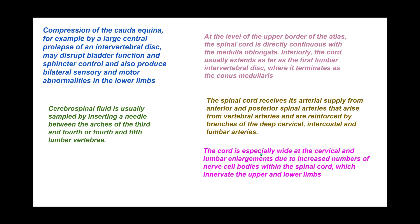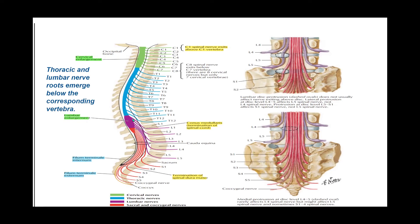The spinal cord is especially wide at the cervical and lumbar enlargements due to increased numbers of nerve cell bodies innervating the upper and lower limbs. These wider areas contain more nuclei — serving the lumbar plexus, cervical plexus, and brachial plexus — providing enough innervation for the upper and lower limbs.